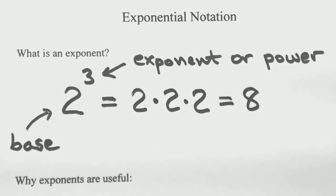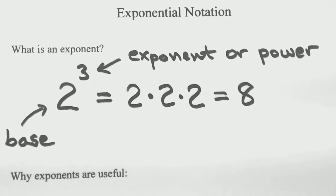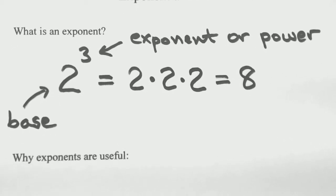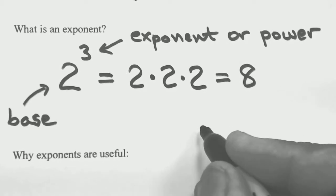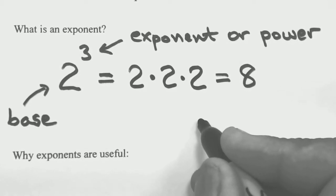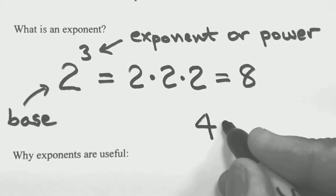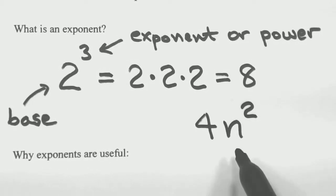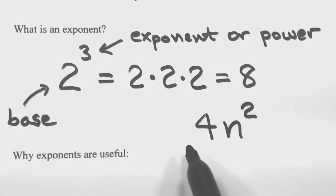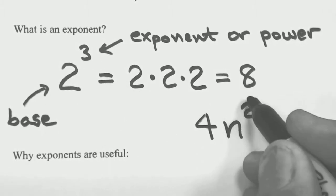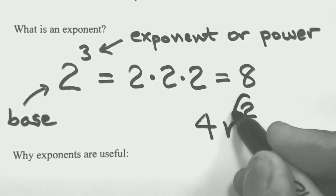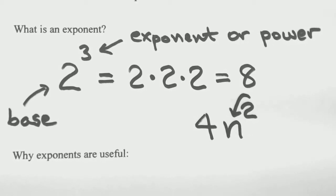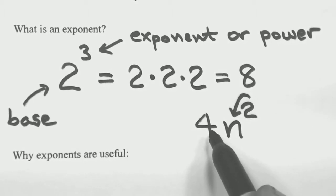One important thing about exponents: the exponent only affects the guy that's immediately in front of it. Let's say we had 4n squared. Variables can have exponents just like numbers do. The power 2 only affects the guy immediately in front — namely the n. That's the only thing being squared. The 4 is too far away; it's not being squared.